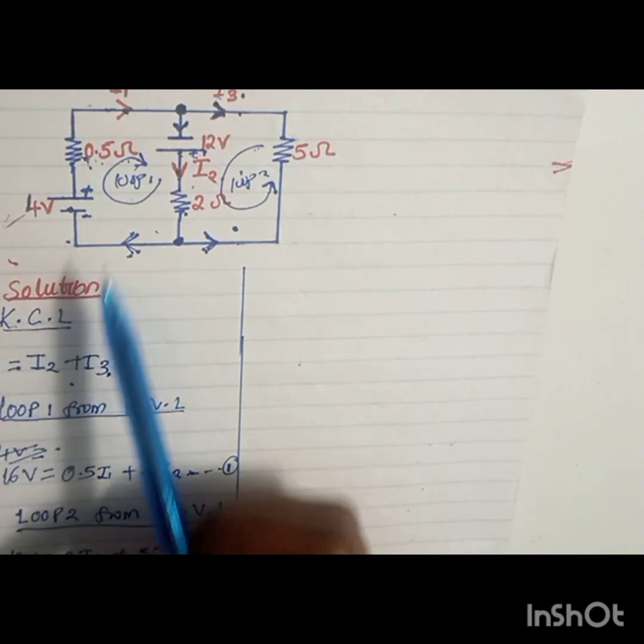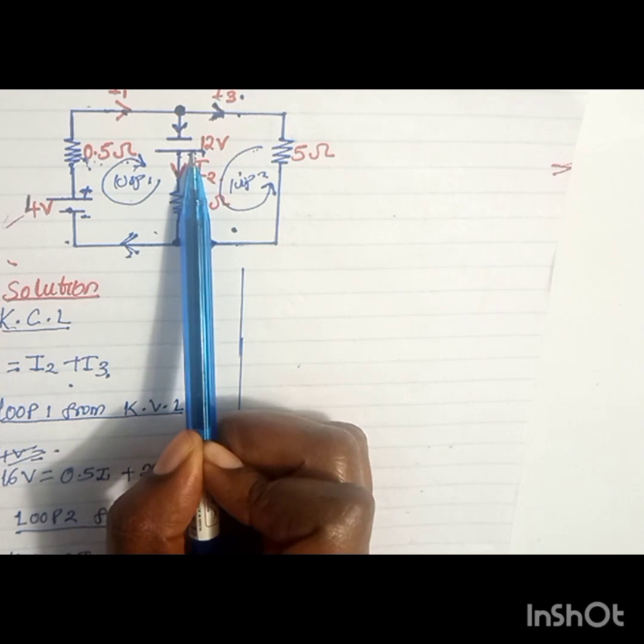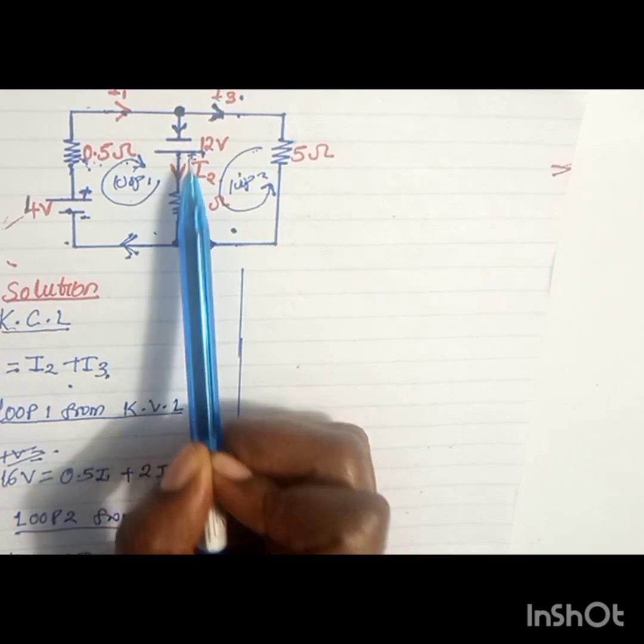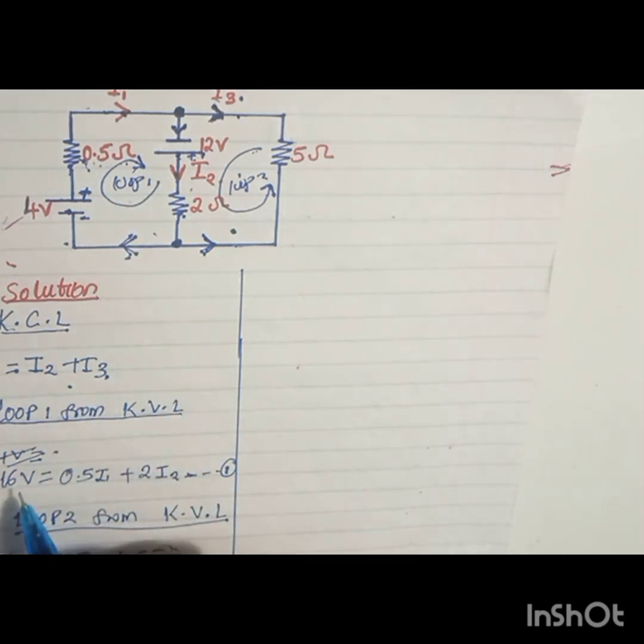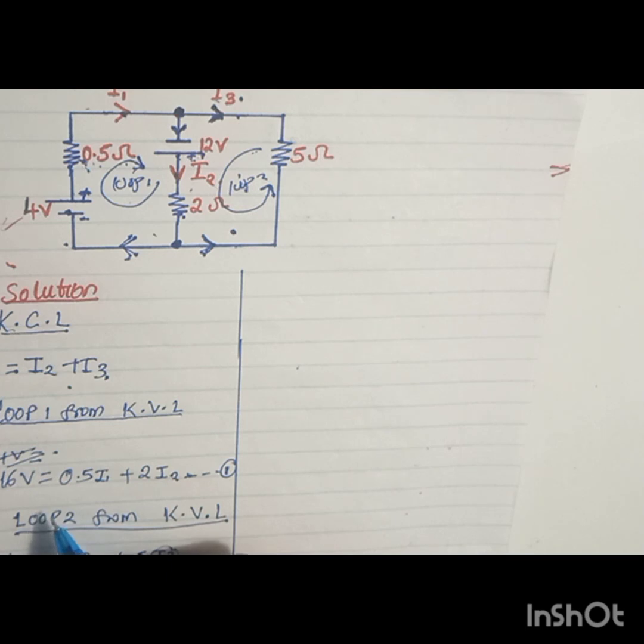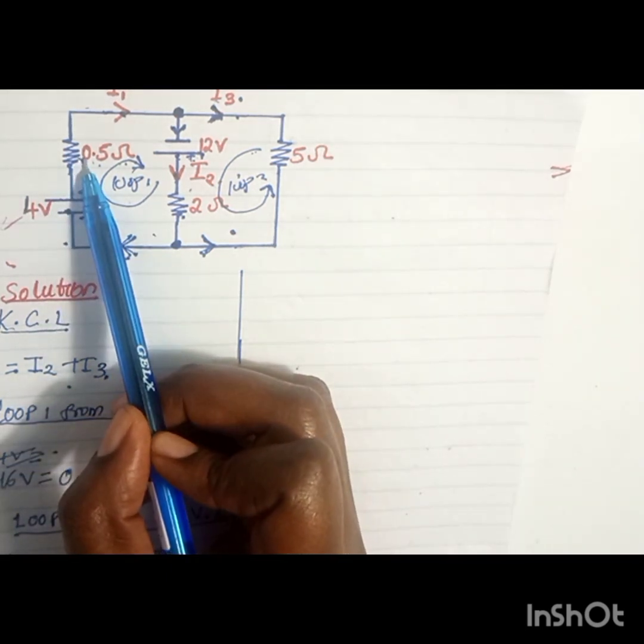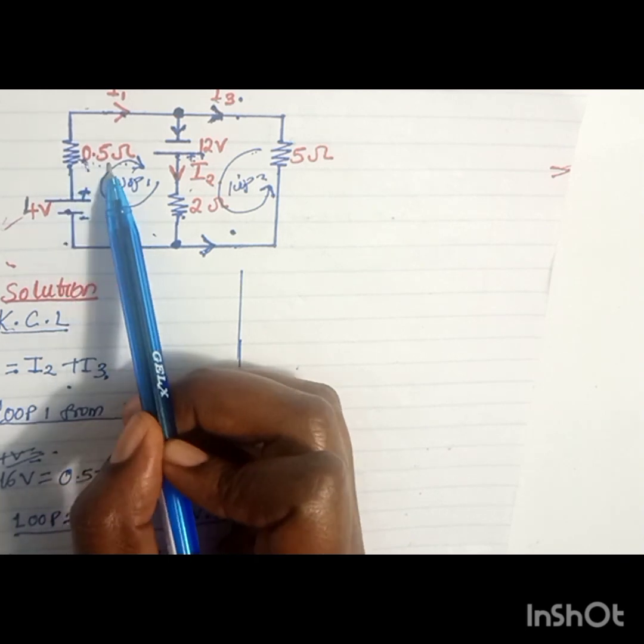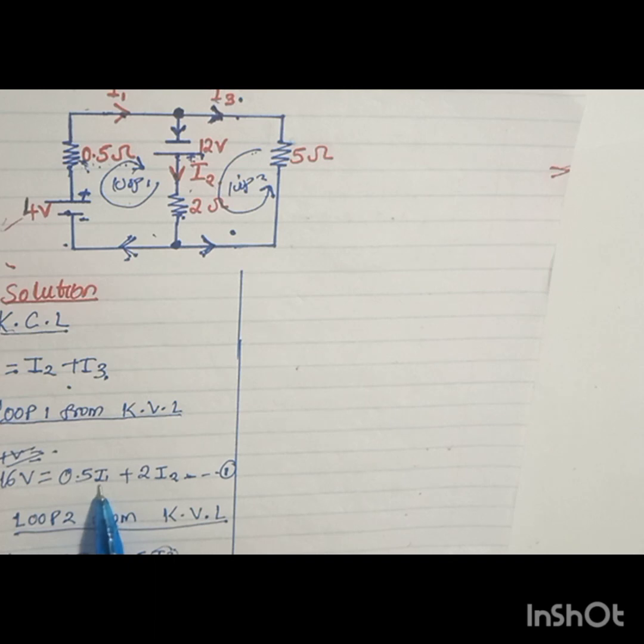The next thing we're going to have is equations from loop one and loop two. We'll start with loop one. When you look at this loop, we have two supply voltages: 4 and 12. We need to take the summation of the two of them. We will have 4 plus 12, which is 16.